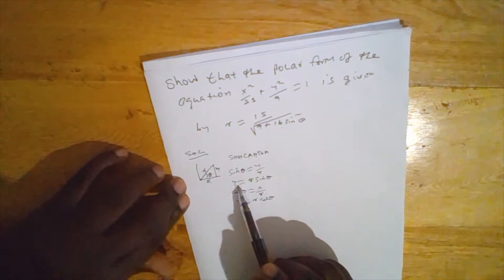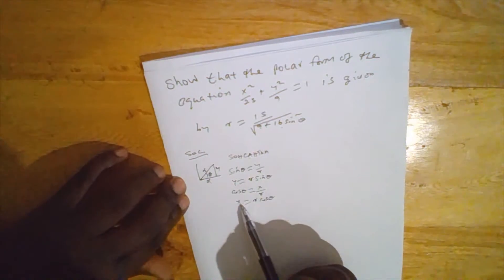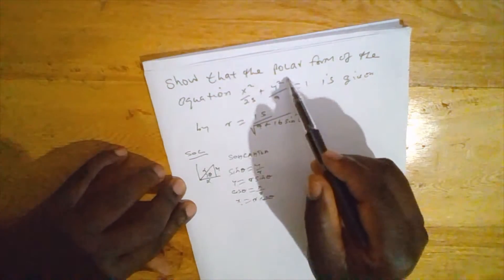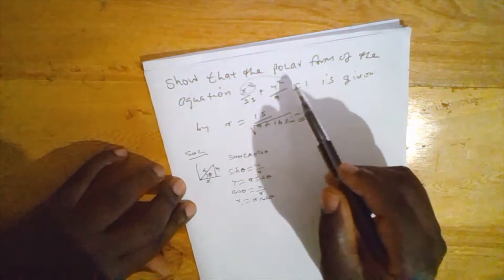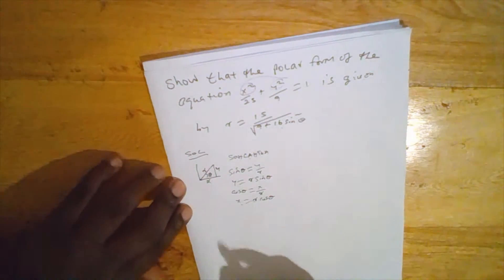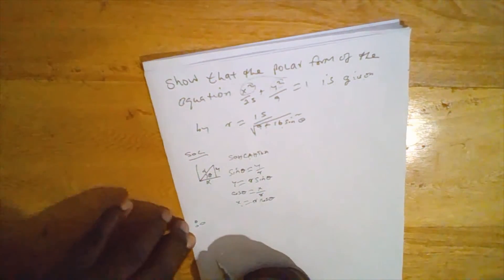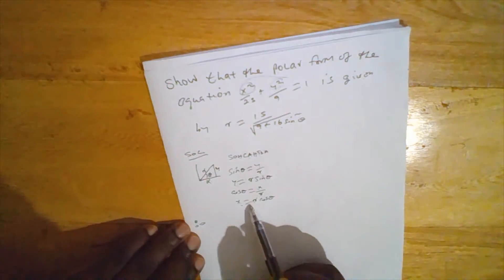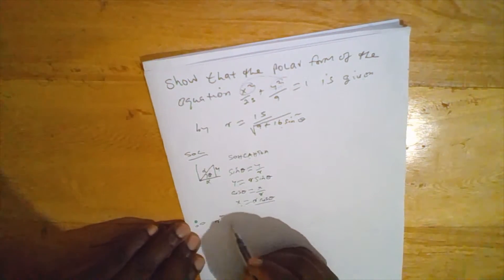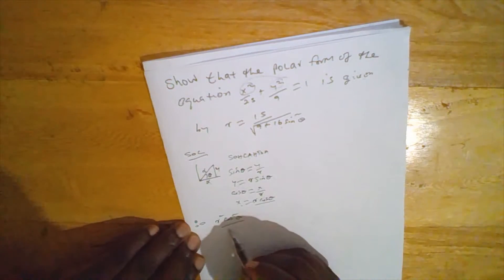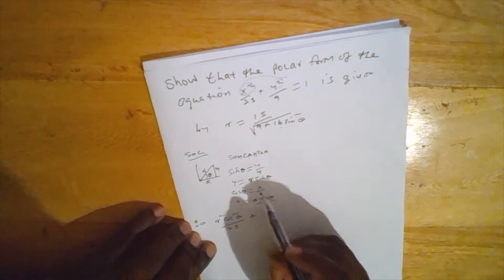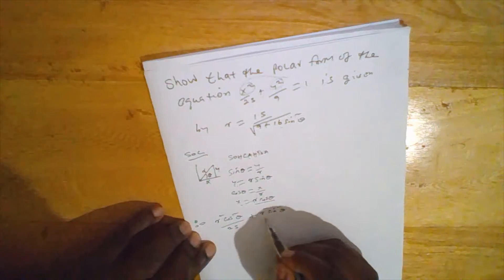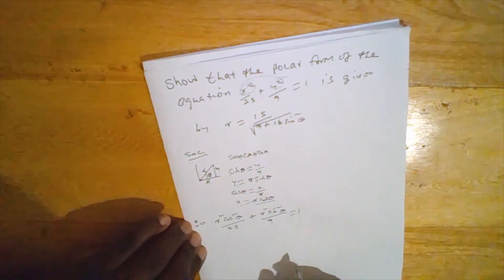We have expressed y in terms of r and the angle, and also x in terms of the radius and angle. We now substitute these into the ellipse equation. The equation becomes r squared cos squared theta over 25 plus r squared sin squared theta over 9 equals 1.